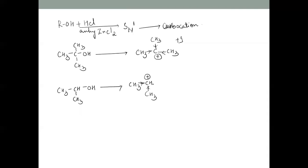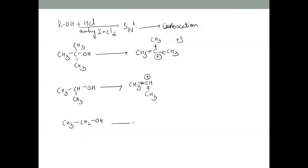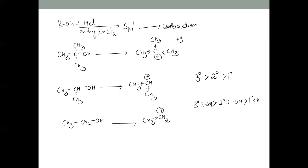If it is a secondary alcohol, the carbocation formed is a secondary carbocation, stabilized by only two CH3 groups — so its stability is less than that of the tertiary. For a primary alcohol, the primary carbocation formed is stabilized by only one CH3 group. So stability order is: tertiary > secondary > primary carbocation.